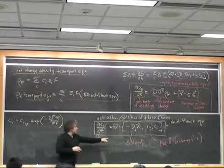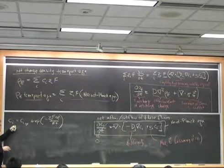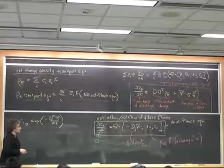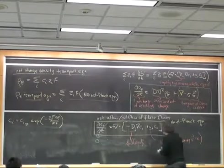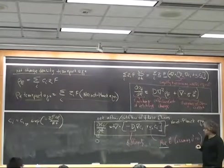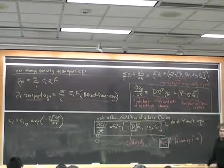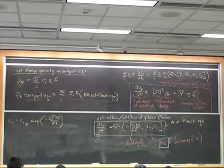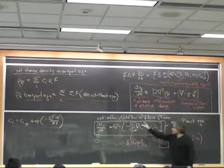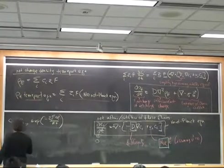But if I want to get from this Nernst-Planck equation to something that really just says that the distribution of species is just an exponential function of the electrostatic potential energy, I have to somehow resolve the fact that I have one unknown transport parameter, the electrophoretic mobility here. And I have another unknown transport parameter there. And unless I have a link between these two, I'm never going to be able to take this equation and reduce it down to something very simple like this.